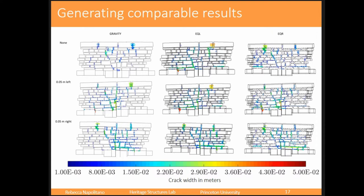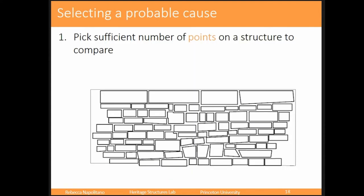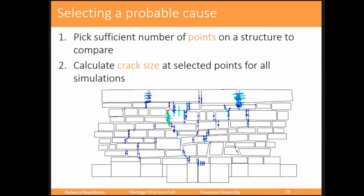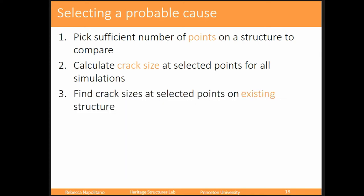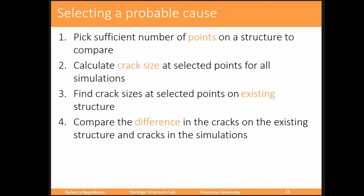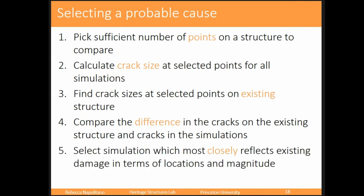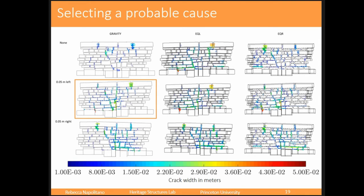Now that we had these results, we had to figure out a way to directly compare them to each other. We picked a sufficient number of points on our structure to compare, calculated the crack size at each of those selected points for each simulation — some would be zero, which was useful, because if your earthquake model shows five centimeters of separation but the real wall shows none there, you know that simulation isn't feasible. Find the crack sizes on the existing structure, compare them to your simulations, and select the simulation that most closely reflects the existing damage in location and magnitude. Looking at the full matrix of 30 simulations, we were able to see that settlement of the left-hand side was causing this crack pattern.